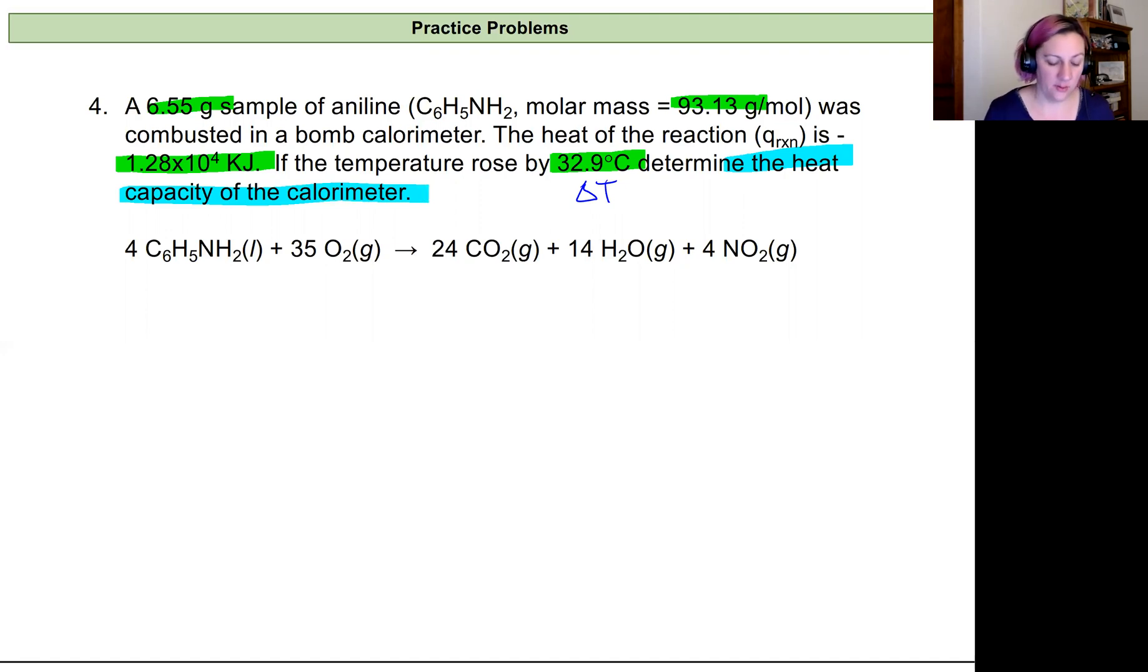So the information that we have here is this 1.28 times 10 to the fourth kilojoules. That's equal to our heat of the reaction, and that reaction is giving off heat. So relative to the reaction, that's actually a negative value. It's heat that is lost because the surroundings temperature increases. We lose that heat from the reaction out to the surroundings, so I'm going to make this a negative value.